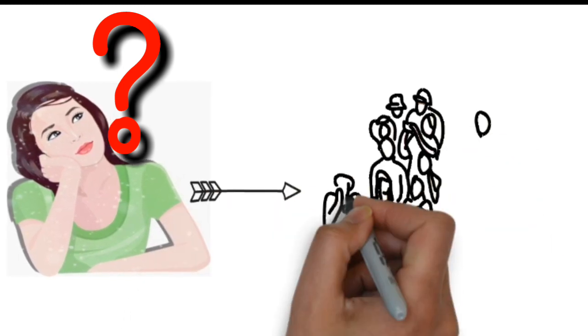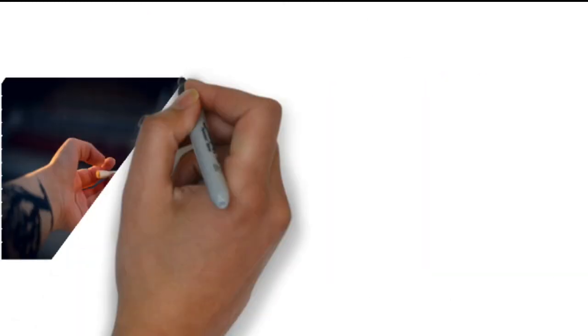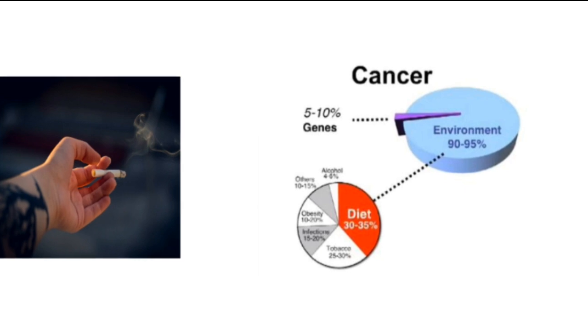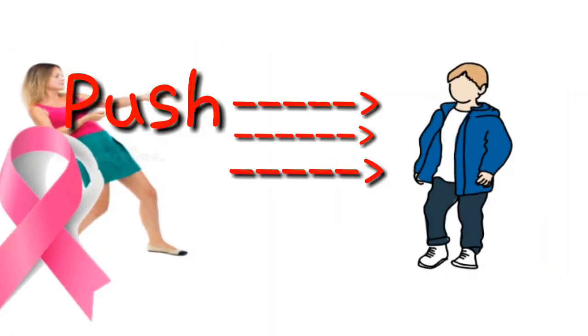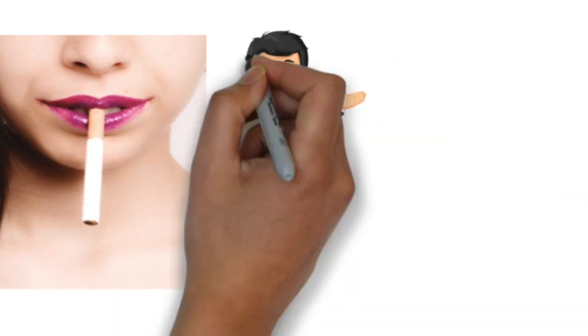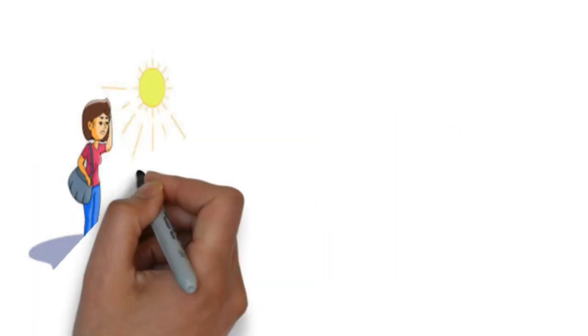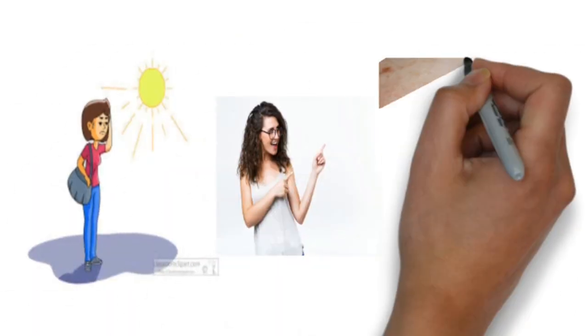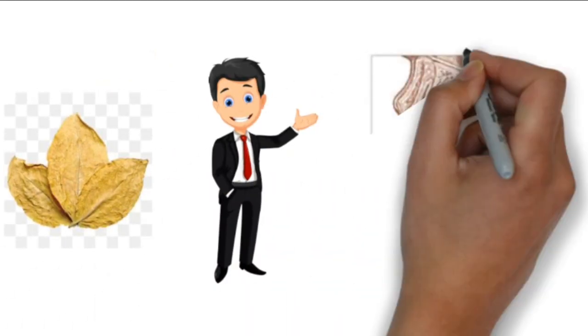Why do people get cancer? No one really knows why cancer grows in certain people. Some behavioral and environmental triggers can cause changes in the human body's cells that push them into a cancer state. For example, cigarettes are known to increase the risk of lung cancer. Too much exposure to the sun can increase the risk of skin cancer. Tobacco increases the risk of mouth cancer.